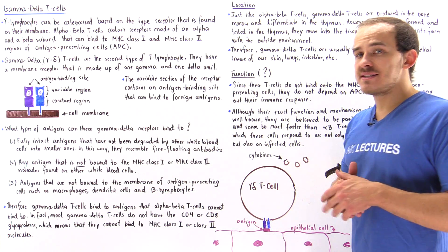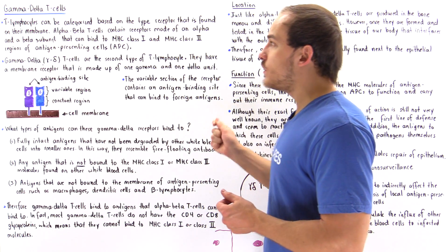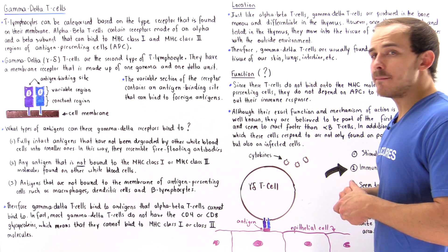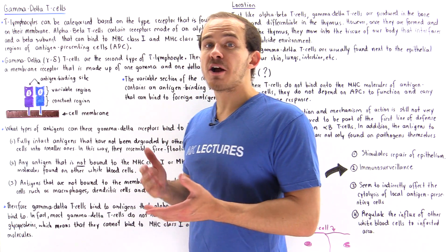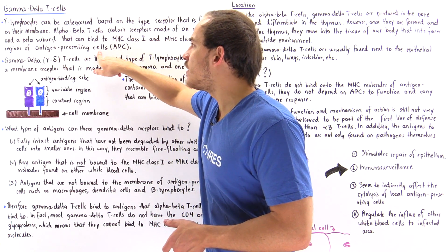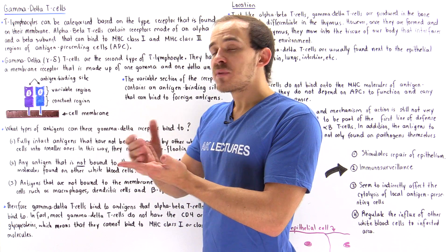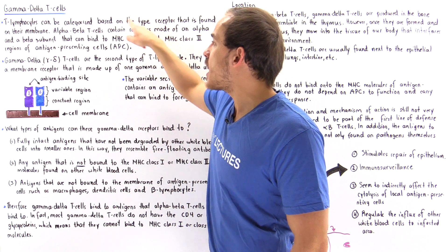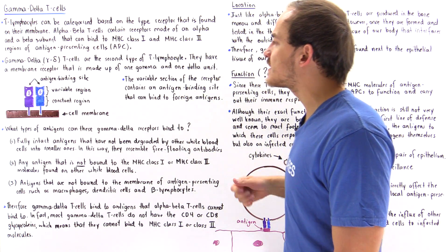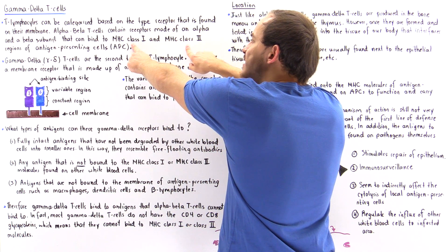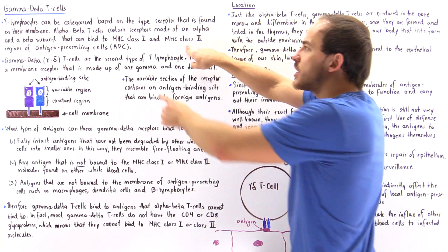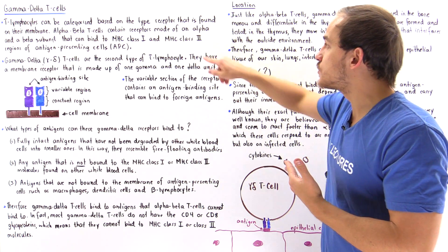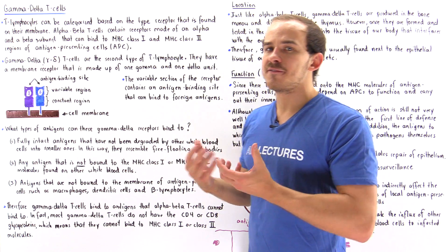Alpha-beta T cells can only bind to either the MHC class 1 or the MHC class 2 complex found on antigen-presenting cells of our immune system. Antigen-presenting cells are cells such as macrophages, dendritic cells, and B lymphocytes that engulf antigens and then present those antigens to T lymphocytes using their major histocompatibility protein complexes. MHC class 1 differentiates between infected cells and healthy cells, while class 2 is used for communicating between different types of white blood cells.